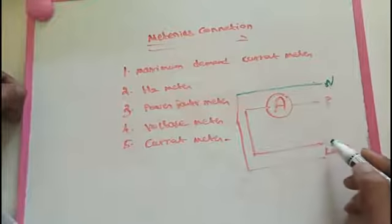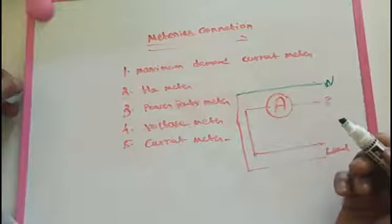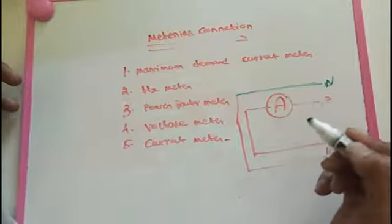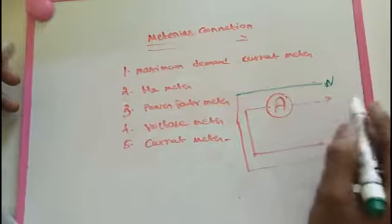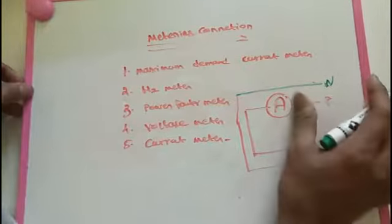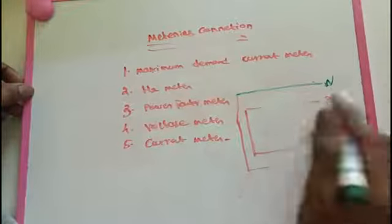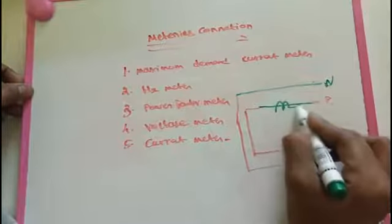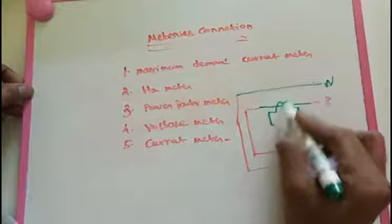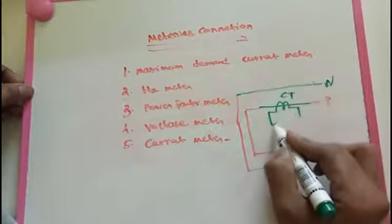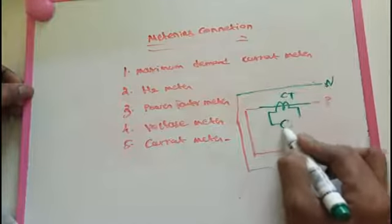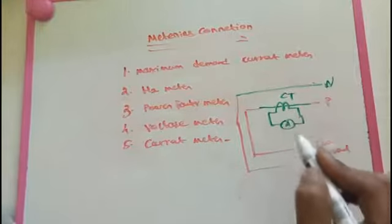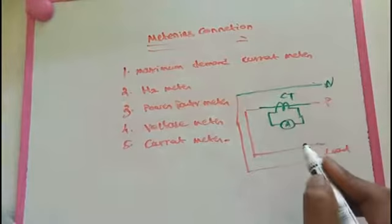If a higher range of current flows, we cannot use a direct ammeter for that rating. In that case, we use a current transformer. We install the current transformer and give a stepped-down output to the ammeter. This is the condition for connecting an ammeter with a CT.